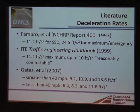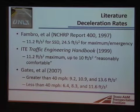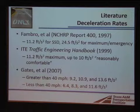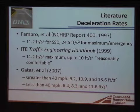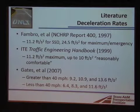In NCHRP Report 400 in 1997, Fambro and others developed the value of 11.2 feet per second squared for stopping sight distance, and about twice that much for maximum or emergency braking. The ITE Traffic Engineering Handbook, the 1999 edition, also uses 11.2 as a maximum and says that up to 10 feet per second squared is reasonably comfortable.